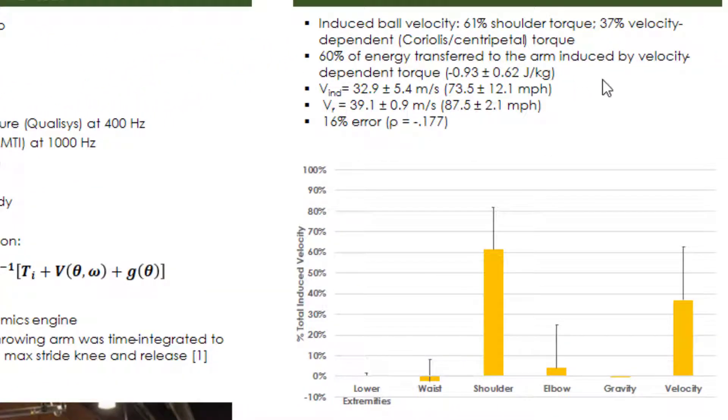Taking a look at the results here, we found that the induced ball velocity was mainly due to the shoulder torque as well as the velocity-dependent torque. This is the Coriolis and centripetal effects of segmental motion.